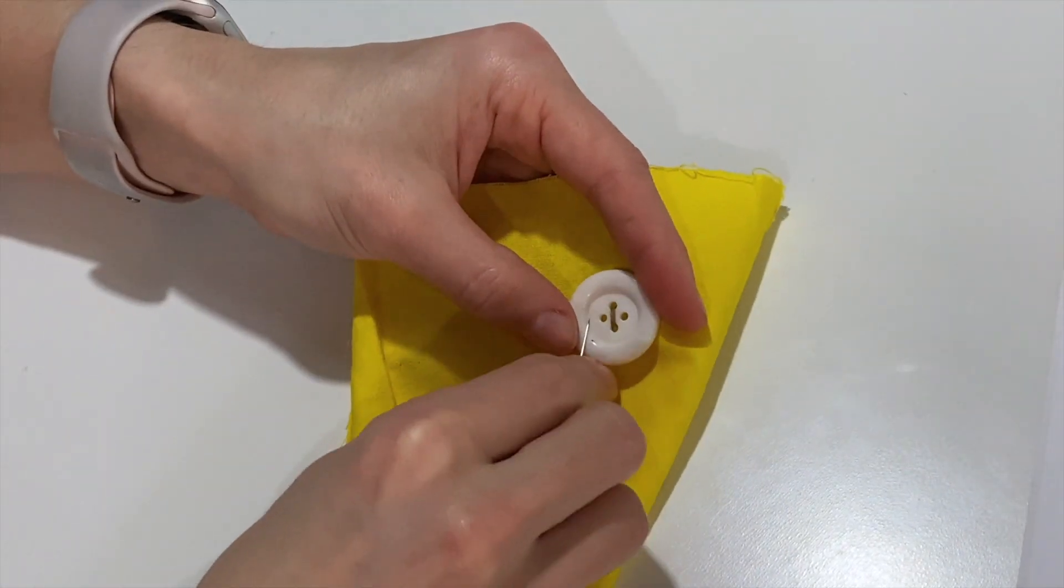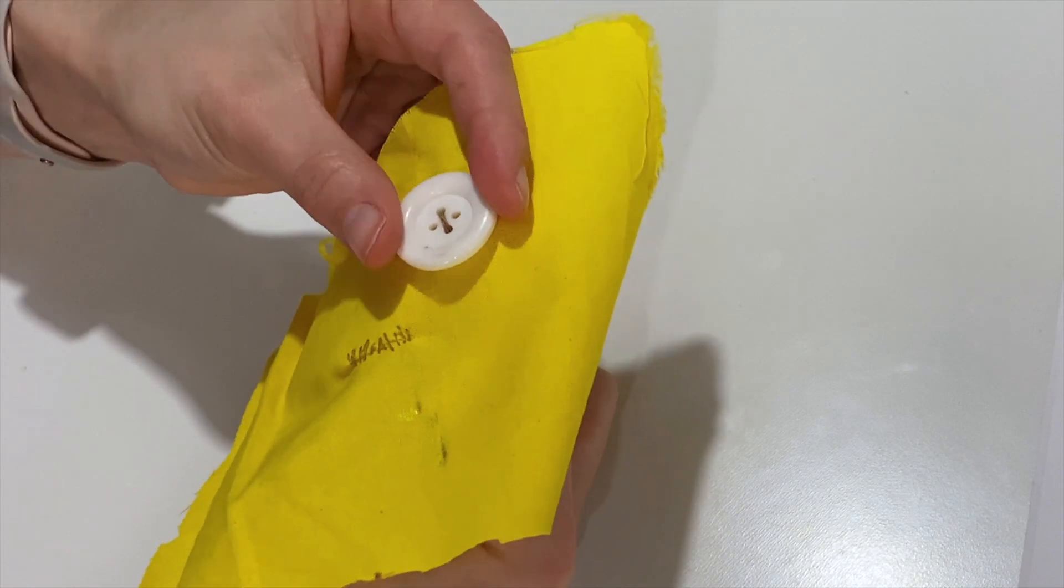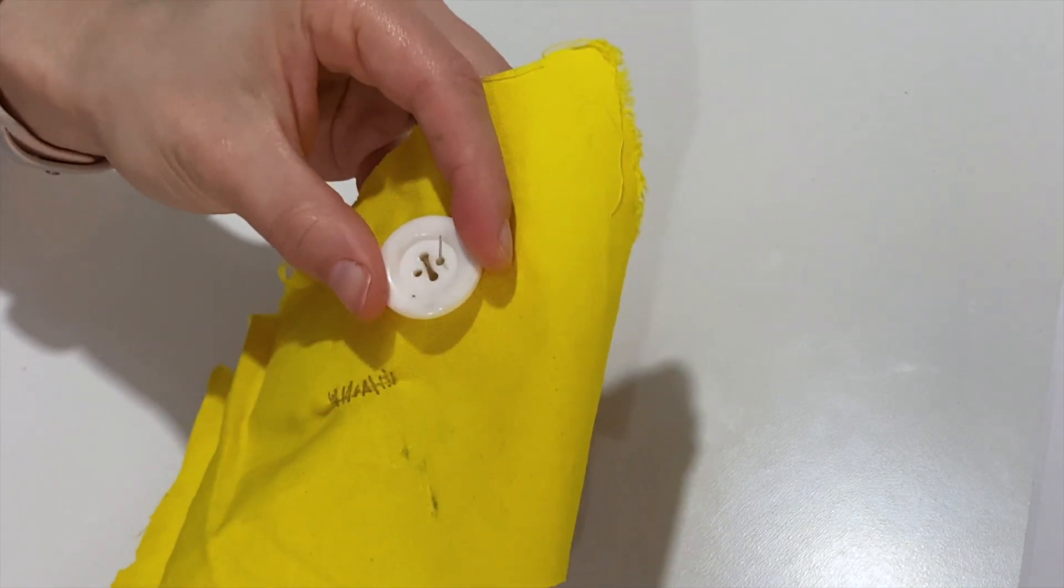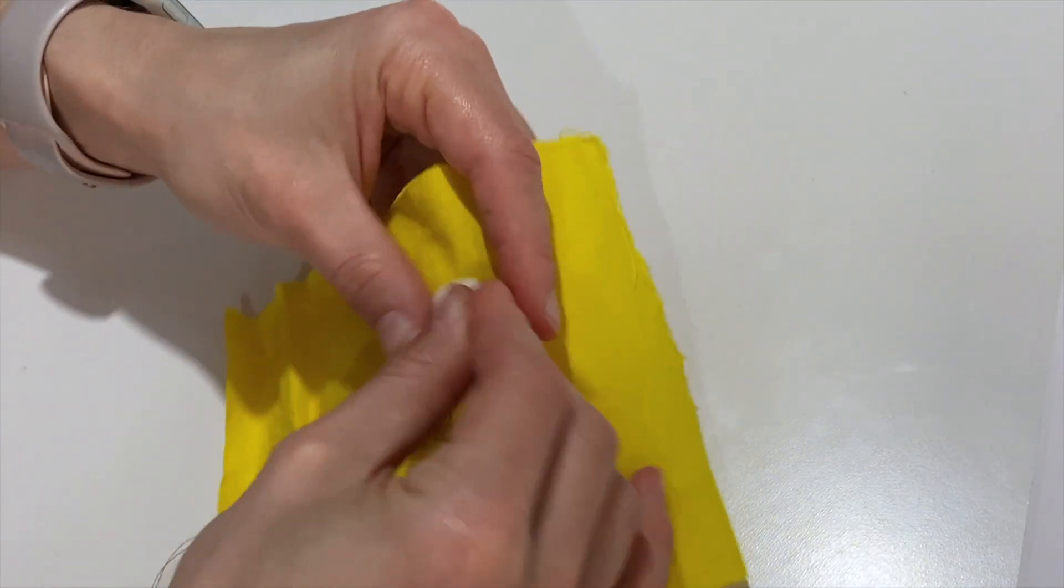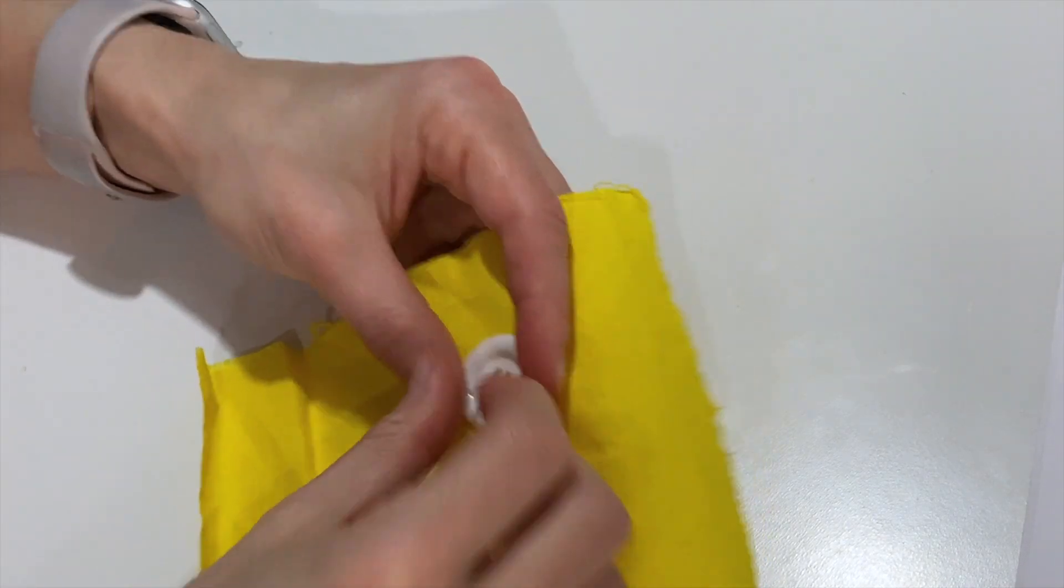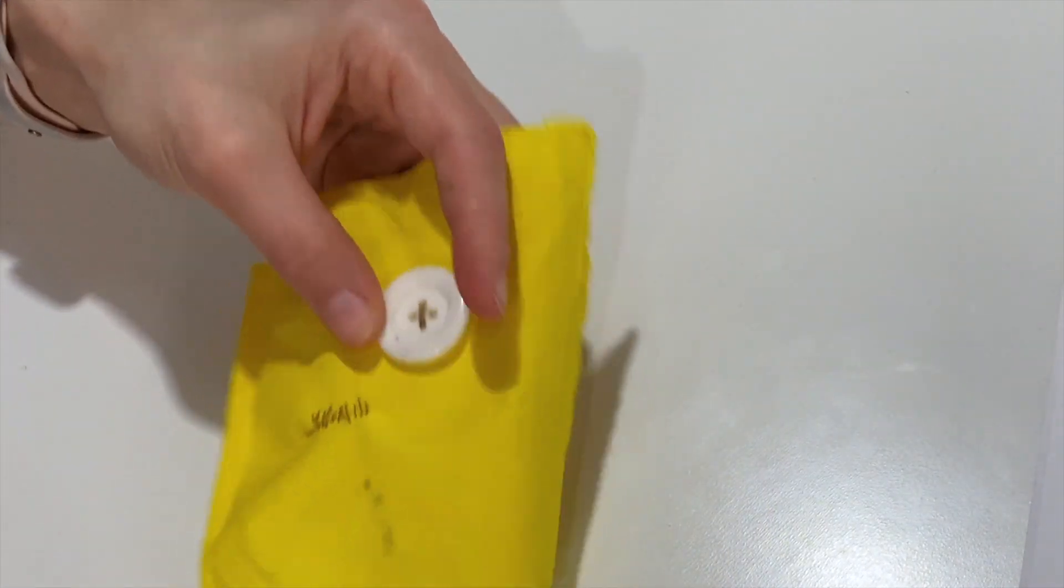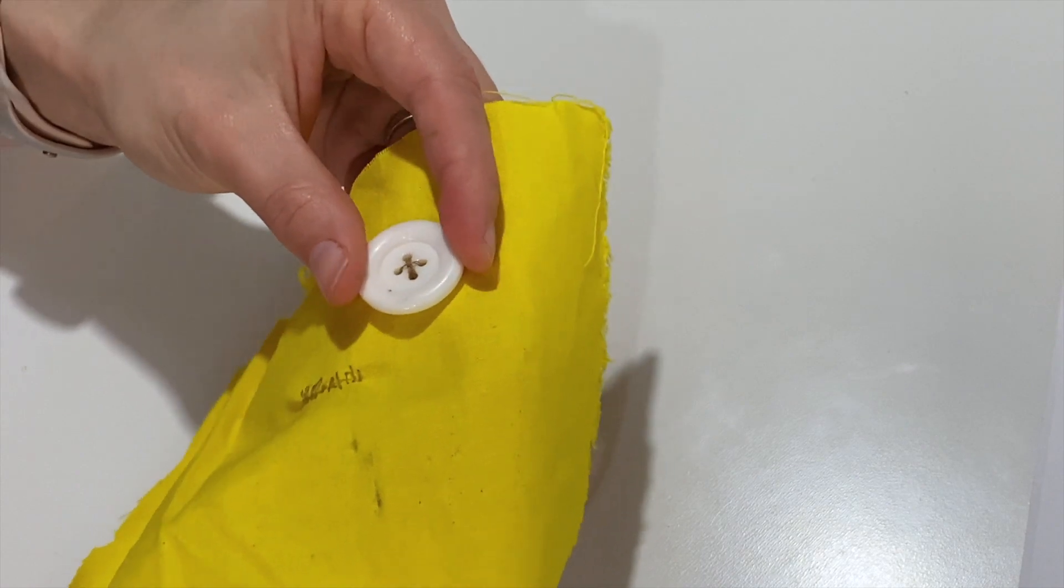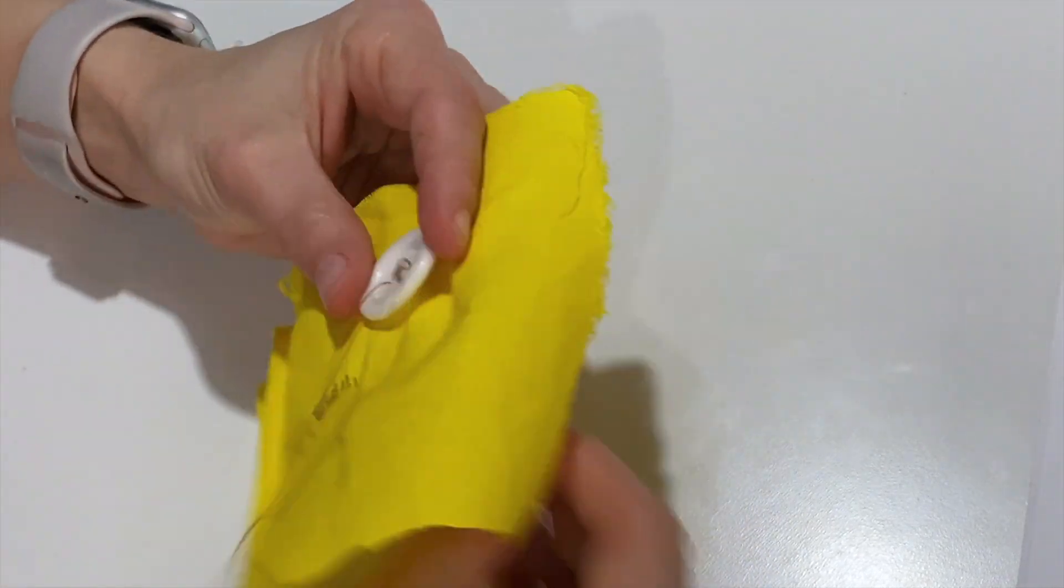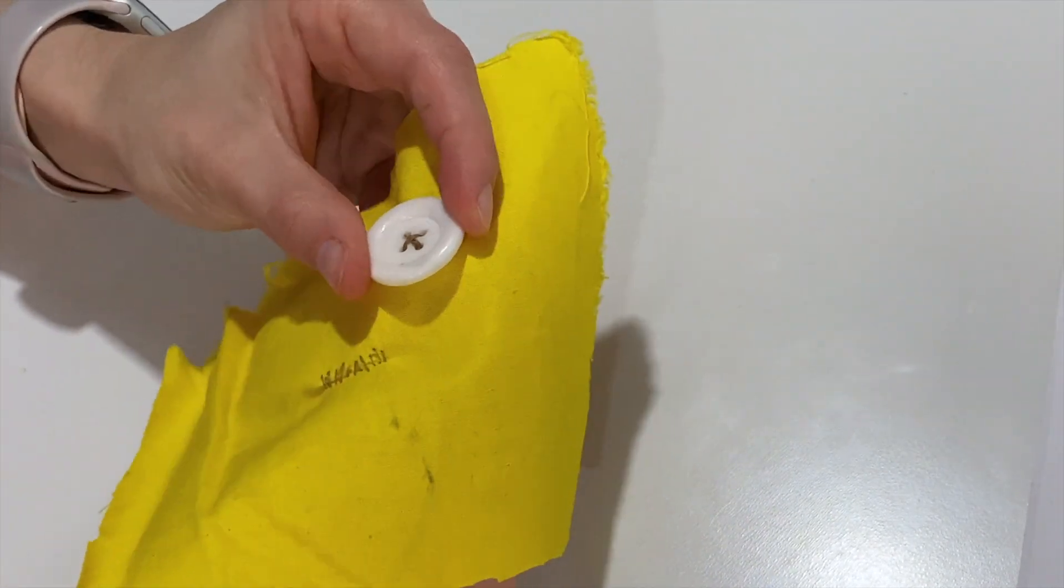We're going to repeat the process we just did by crossing over diagonally into the other empty hole. Continue this diagonal stitch four times for this part of the button. Once you finish those four, make sure you end by continuing your needle through to the back of your project.